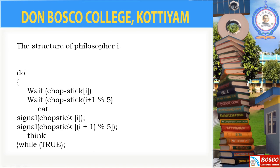Whenever the eat process completes, the signal of chopstick of i is incremented by 1 so that another chopstick can be acquired. Then the adjacent chopstick's semaphore is also increased, so another process can acquire that chopstick. The philosopher then releases the chopsticks and enters into the thinking process. This is the structure for the Dining Philosopher Problem.